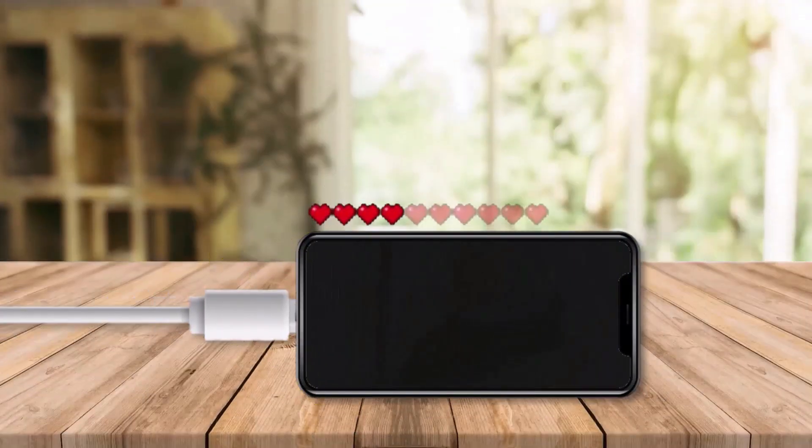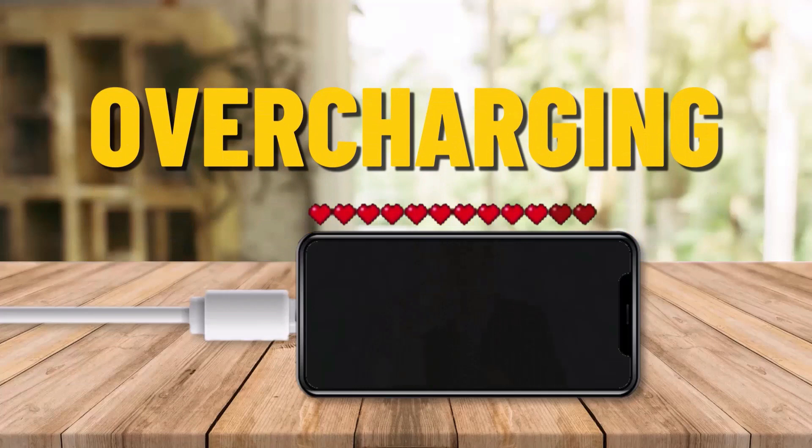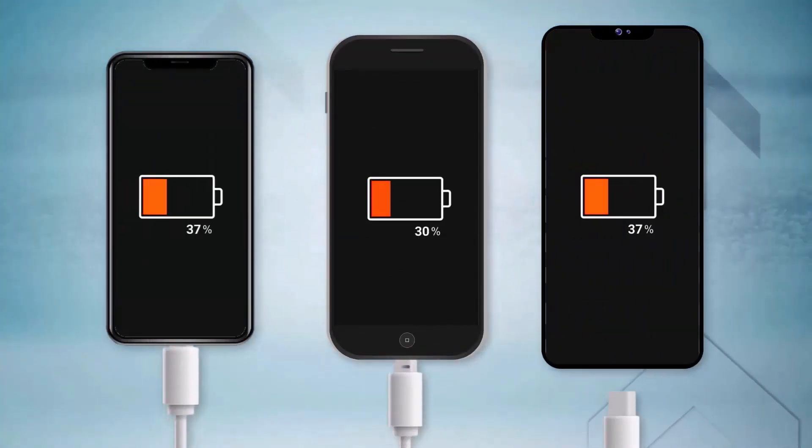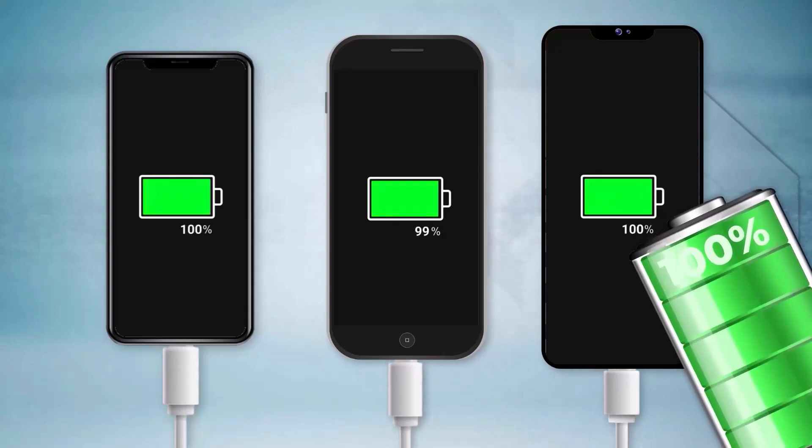Charging a battery beyond its maximum capacity, known as overcharging, can generate excessive heat and harm the battery. However, phones are designed to automatically stop charging once the battery reaches 100% capacity.